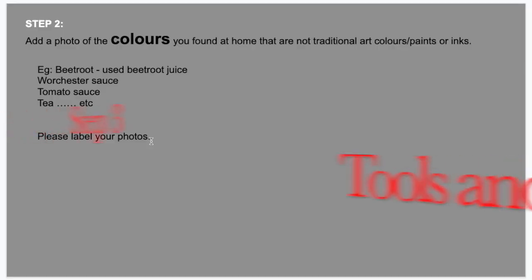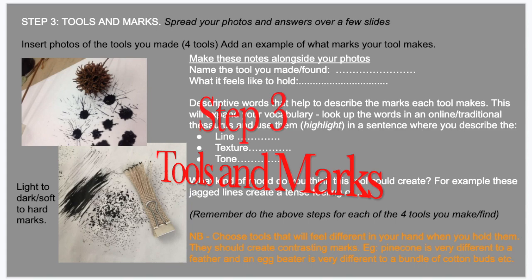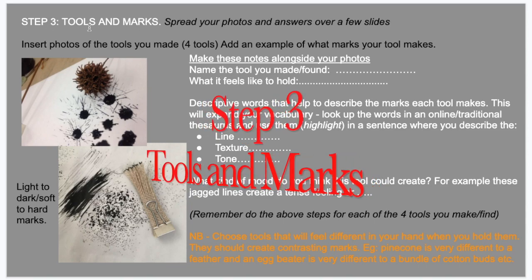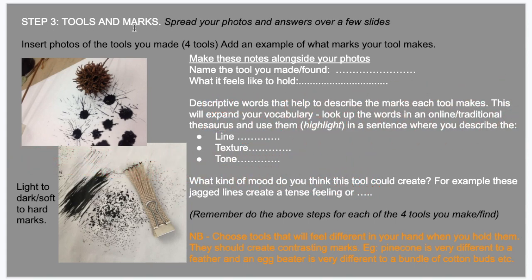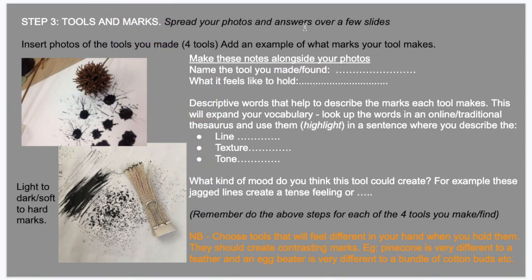Step three is tools and marks. Spread your photos and answers over a few slides. Insert photos of the tools you made and add an example of what marks each tool makes — this will help with answering the questions. You can see there's a spiky little seed and the marks it makes, and a whole lot of little pieces of string bound together and what marks they make. You're using the colours you found, like the beetroot and things like that.